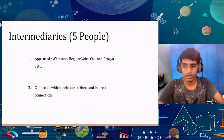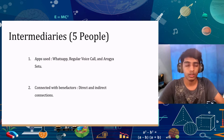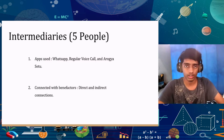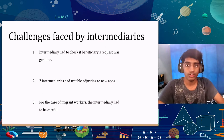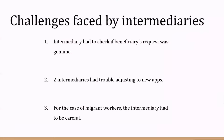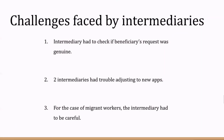The intermediaries used WhatsApp, regular voice calls, and Aarogya Setu to communicate. Many intermediaries got together and created an online network with benefactors using old connections. Challenges faced by intermediaries included verifying whether a beneficiary's request was genuine, as they didn't want to fall prey to scams. Two intermediaries also had trouble adjusting to new apps.